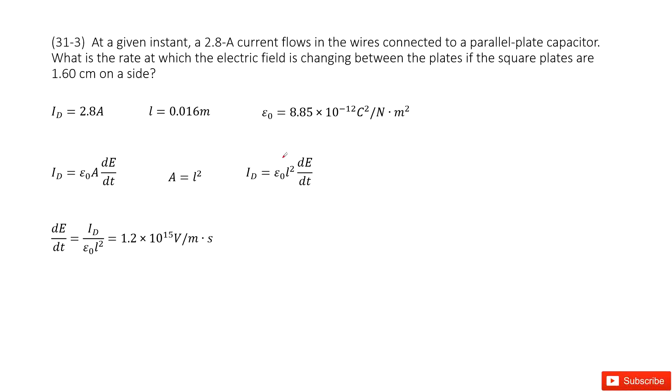So, we have a given instant where we know the displacement current in the wire is given as ID. This is 2.8 Amperes. Now we look at this wire.